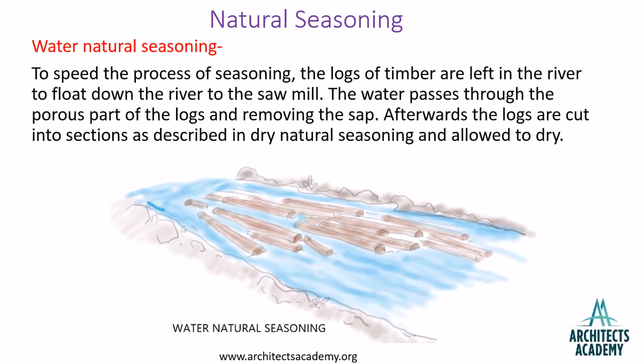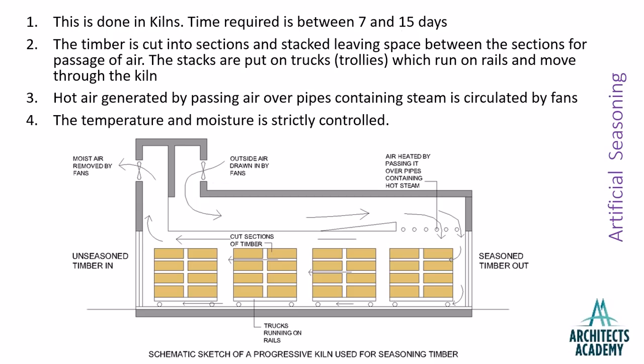When the tree is felled, the logs of timber are left in the river to float down to the sawmill. The water passes through the porous parts of the logs and removes the sap. Afterwards, the logs are cut into sections as described in dry natural seasoning and allowed to dry. This water seasoning method is used to speed up the overall seasoning process.